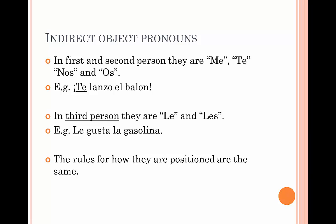The rules for how they're positioned are exactly the same as those of the direct object pronouns. So when describing a person, we use le. If it's a positive command, it goes after the verb. However, if it's a negative command, it goes before the verb.